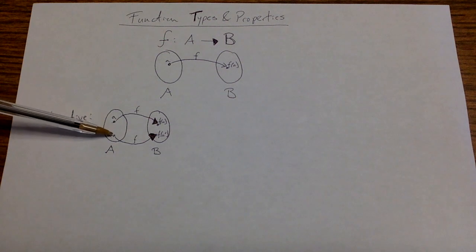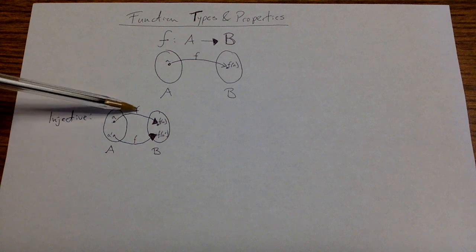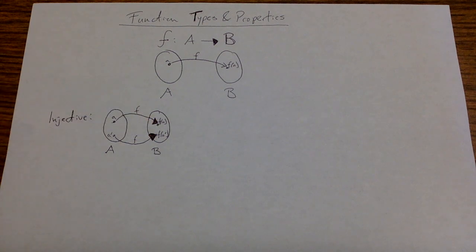That's one way to think about it is that if I have two distinct elements of my domain, they are mapped to distinct outputs in the codomain. So the idea is I have at most one incoming arrow for everything on the right.